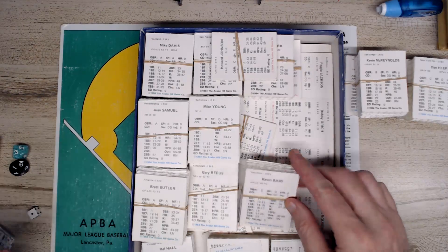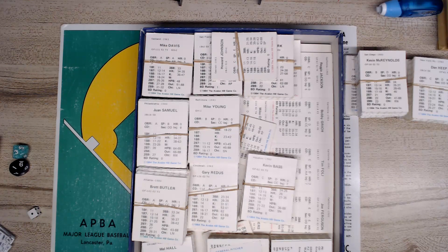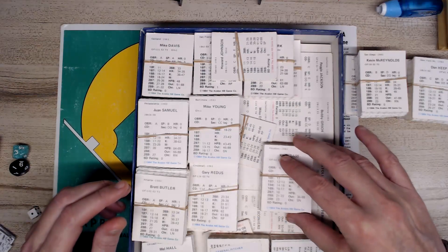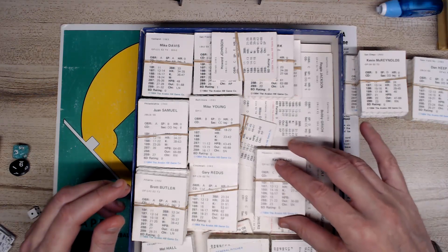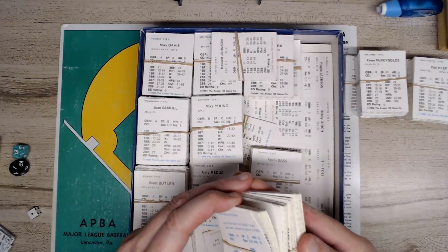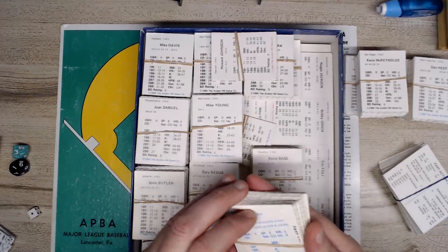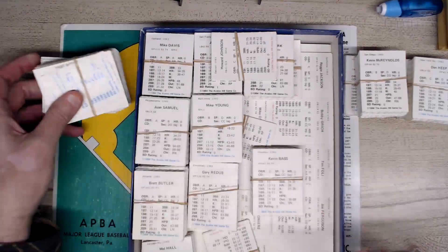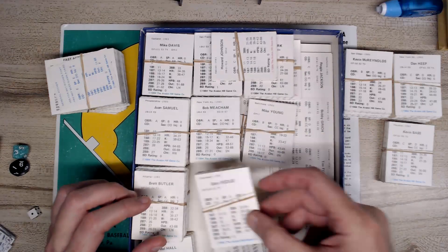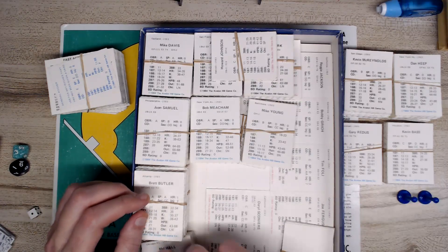They said we think there's a couple of teams missing, maybe with the Angels. Here are the fast action cards. Looks like there's two sets of fast action cards, which is good. Houston, so more National League teams. I'm trying to separate the National League teams.